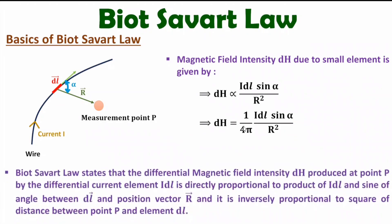Here I have mentioned the statement as well. Biot-Savart law states that the differential magnetic field intensity dH produced at point P by differential current element I·dl is directly proportional to the product of I·dl and the sine of angle between dl and position vector r — that is sin alpha — and it is inversely proportional to the square of distance between point P and dl, that is r². The proportionality constant is 1 by 4π.